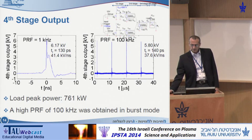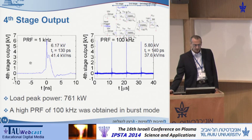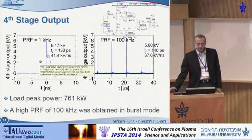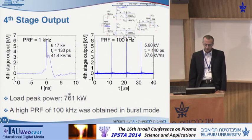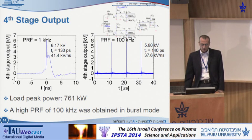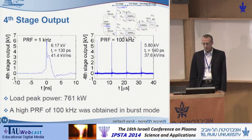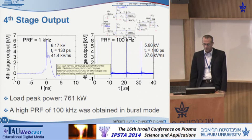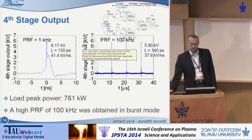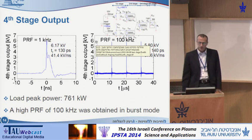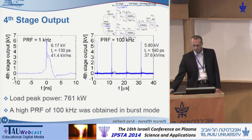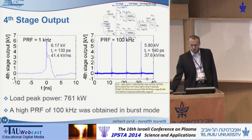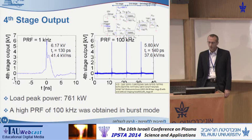Connecting the shaping head — the 1 picofarad capacitor and the silicon avalanche shaper diode — we obtained 6.17 kilovolts, corresponding to 761 kilowatts peak power, with a rise time of 130 picoseconds. That brings a voltage rise rate of over 40 kilovolts per nanosecond. Operating in burst mode at a PRF of 100 kilohertz, we observed slight degradation to 5.8 kilovolts output voltage and a rise time of 140 picoseconds.